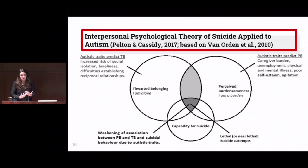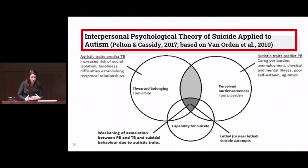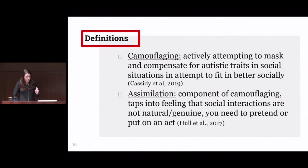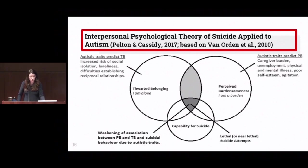Autistic traits that may contribute to thwarted belonging include increased risk of social isolation, the experience of loneliness, and difficulty establishing reciprocal relationships. Additional research from Cassidy's group showed a very strong connection between social camouflaging and the experience of thwarted belonging, which totally makes sense — if I don't belong, I have to change who I am in order to fit into the situation.